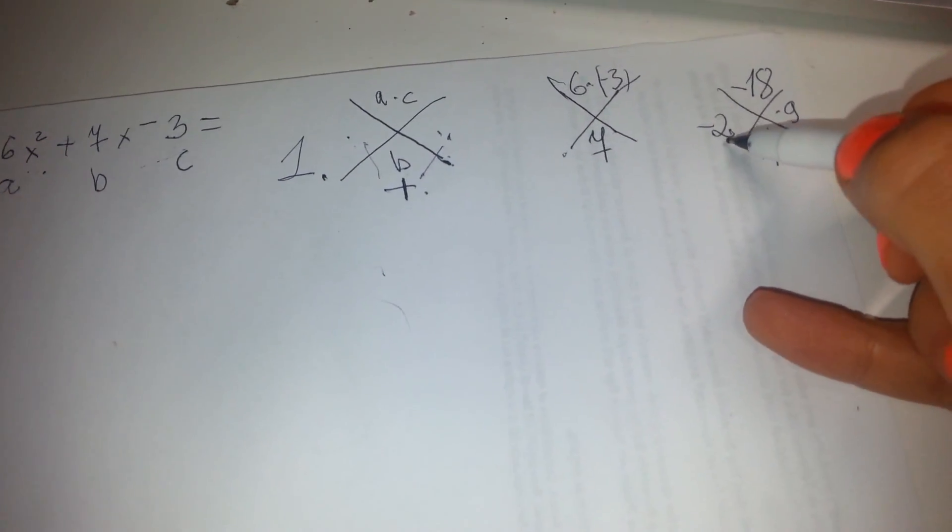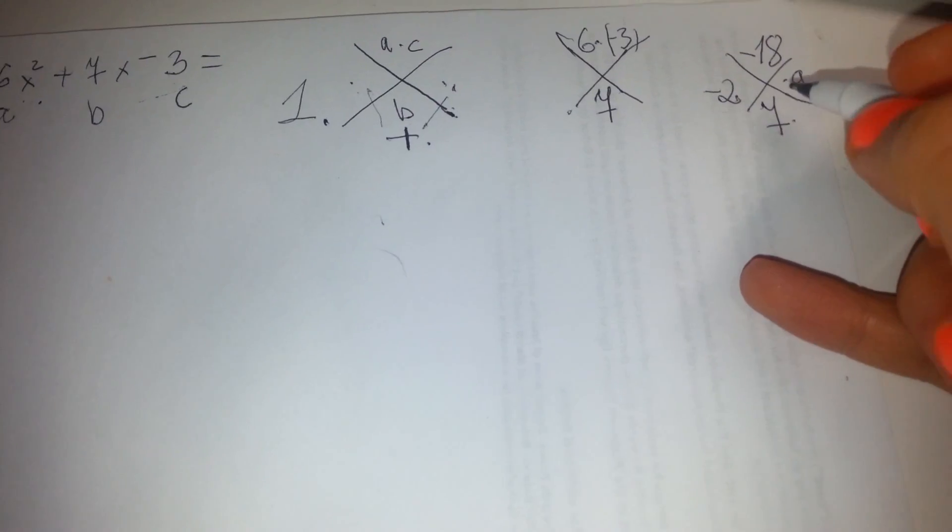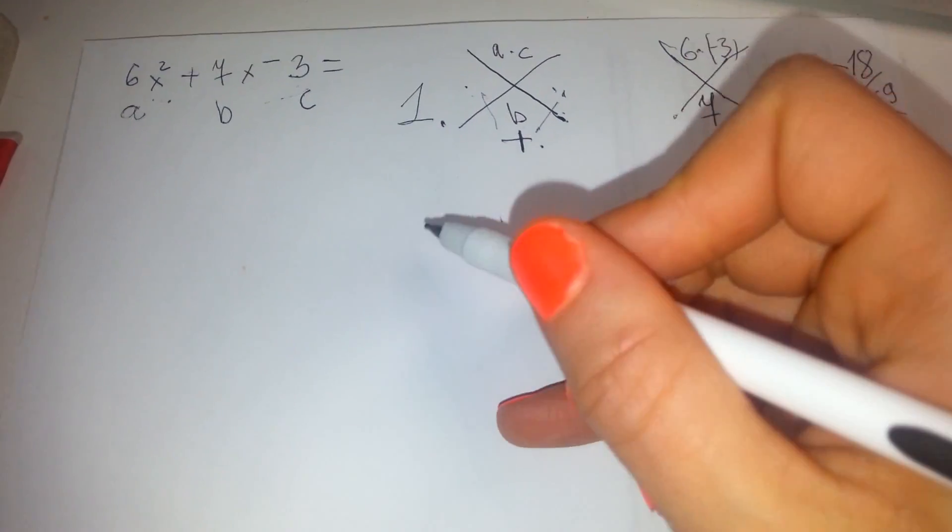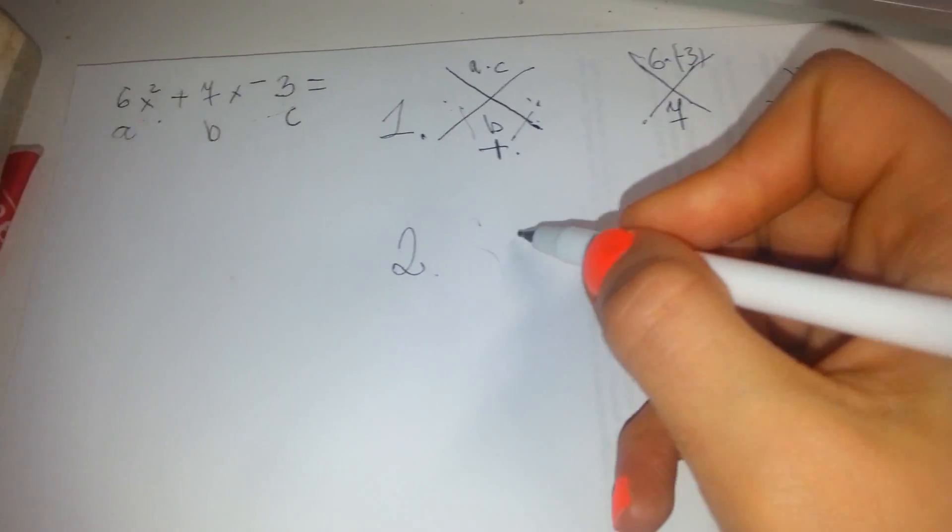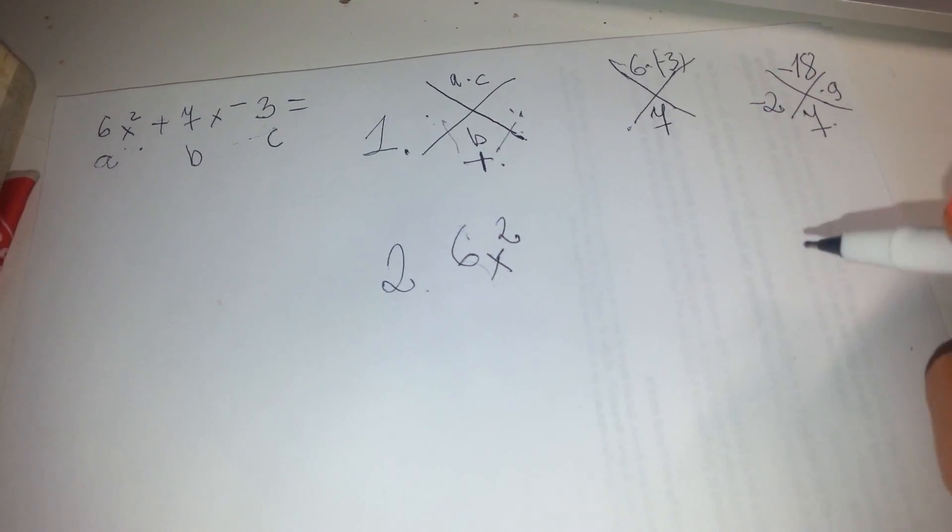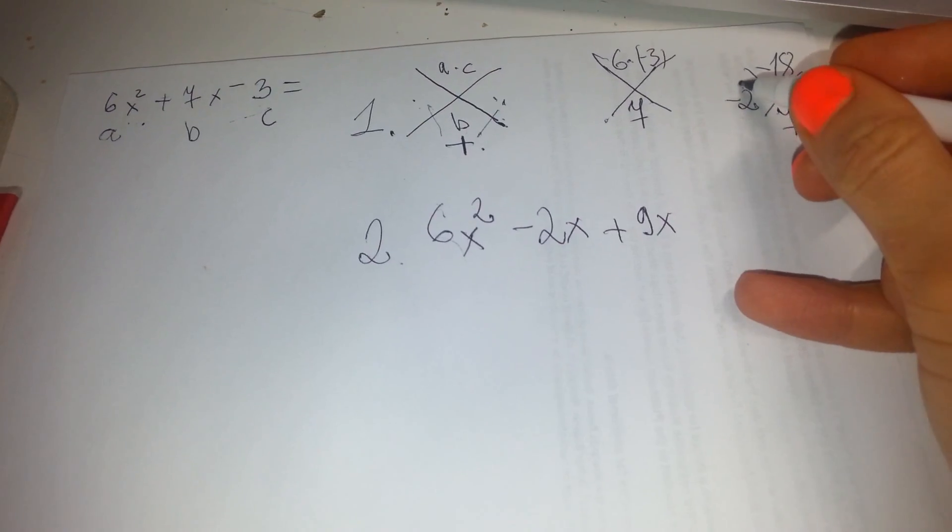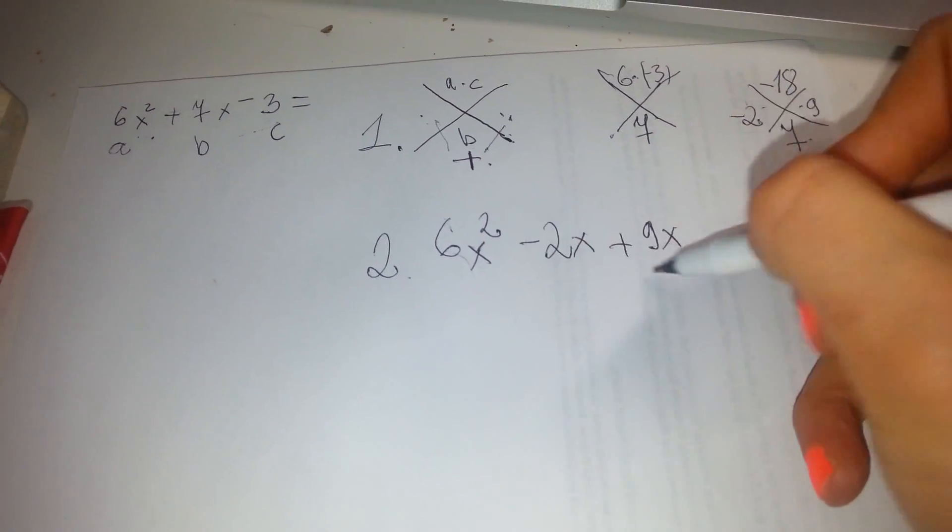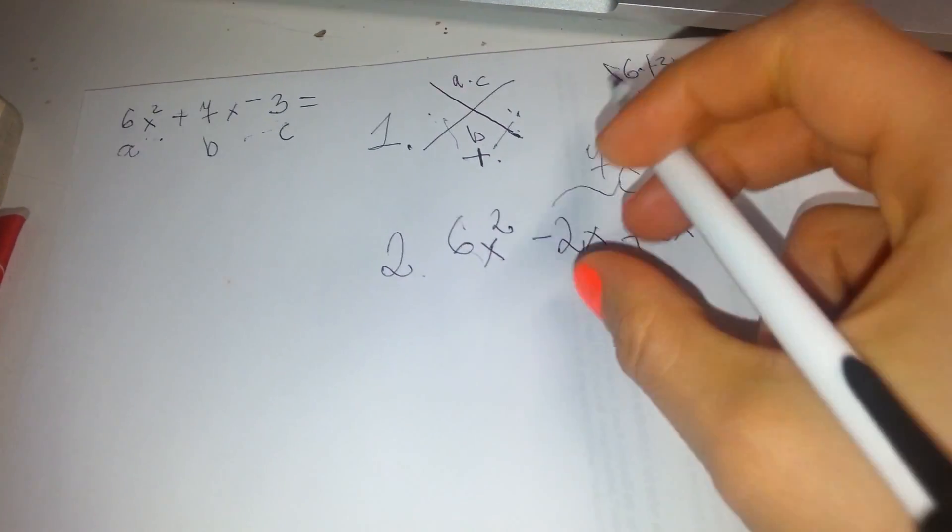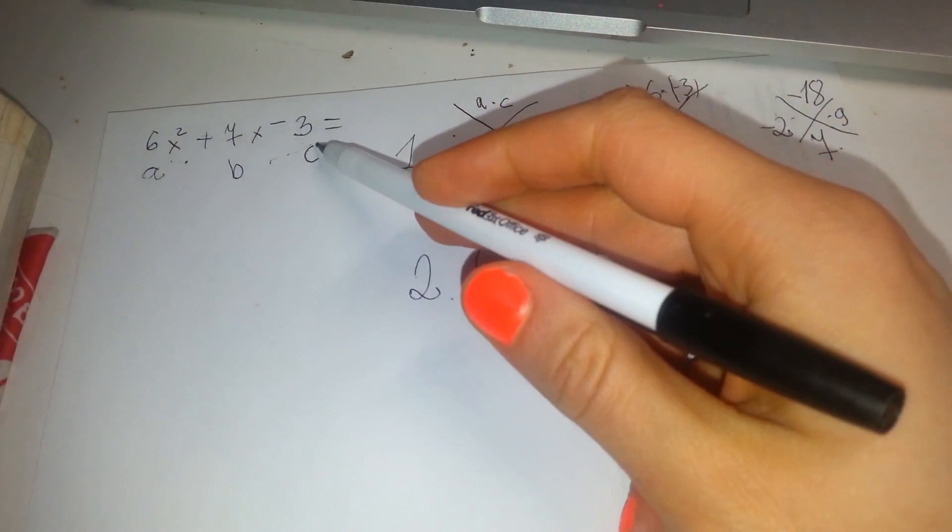Now, we determined that when we multiply minus 2 and 9, we get minus 18, and then when you add minus 2 and 9, you get 7. Okay, so it's all good. Now, the second step is, we write 6x squared minus 2x plus 9x. You see what we're doing now? We're writing in this form, and then when you look at it, this is the 7x. So this is the same thing, you just expanded it. You wrote it in this way, and then we write minus 3. Don't ever forget to write this minus 3.